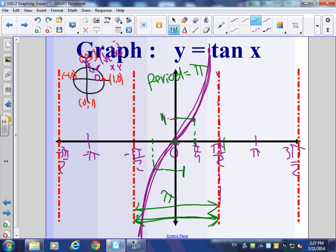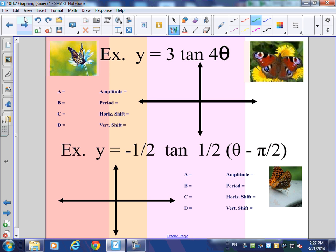So are you ready to graph a real tangent graph? I am. 3 tangent 4θ. The amplitude just like before is 3, B is 4, there's no shift, there's no D, so none and none. Amplitude is always the same as far as calculating, but it's going to look very different for tangent.